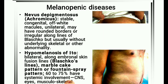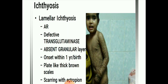Next image: Xeroderma pigmentosum. Next image: Melanopenic diseases — nevus depigmentosus (achromic nevus). It is a stable congenital hypopigmented macule, unilateral, may have rounded borders or irregular borders along lines of Blaschko, but usually without underlying skeletal or other abnormality. Hypomelanosis of Ito: bilateral, along embryonal skin fusion lines (Blaschko's lines), marble kick pattern or fountain spray pattern. 60 to 75 percent have systemic involvement of the central nervous system, eyes, and musculoskeletal system.